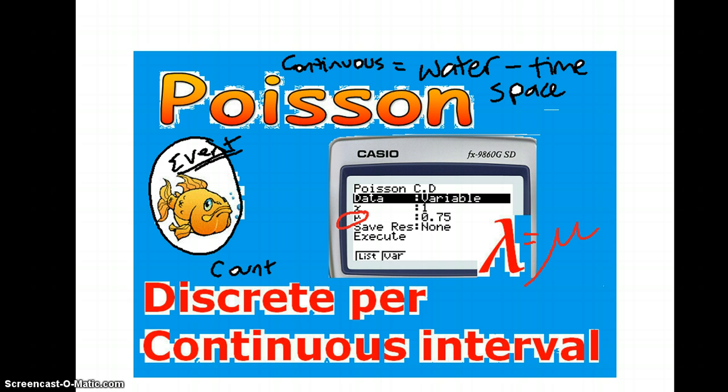Now for the Poisson, it's different. It's not a set number of trials — it's a continuous time or space, that sort of thing. So it might be per hour or per square kilometre, something like that. It's not a set number of trials.